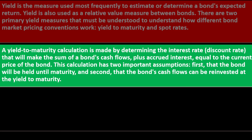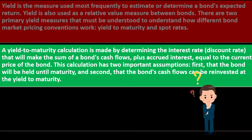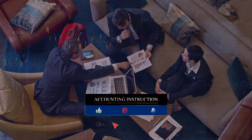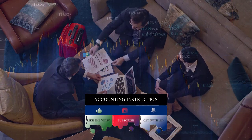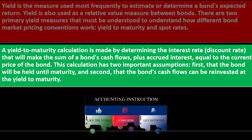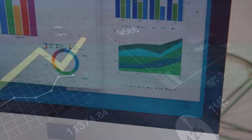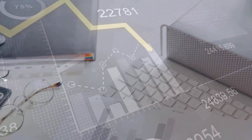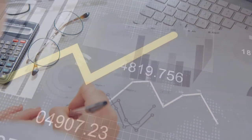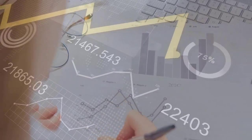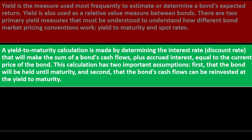When thinking about a bond, you can think of it as future cash flows — semi-annual interest payments, like an annuity stream, going forward — plus the face value received at maturity, which is like the return of principal. We can use present value factors to discount those future cash flows and figure out the discount rate at which it matches the price of the bond. This calculation has two important assumptions: first, that the bond will be held until maturity, and second, that the bond's cash flows can be reinvested at the yield to maturity.